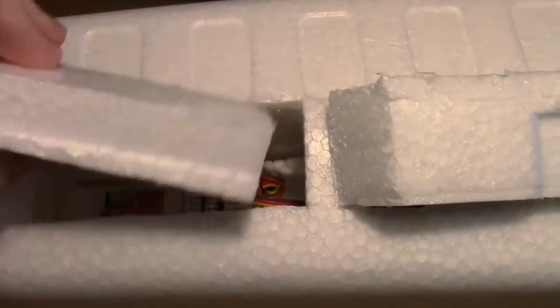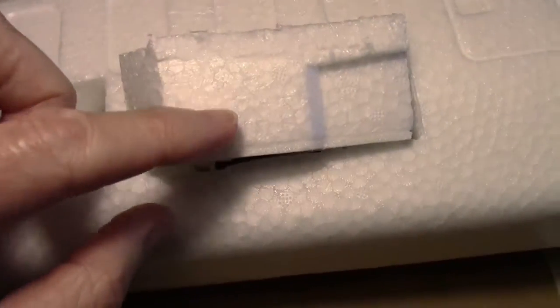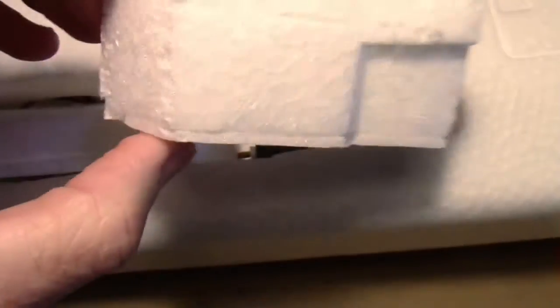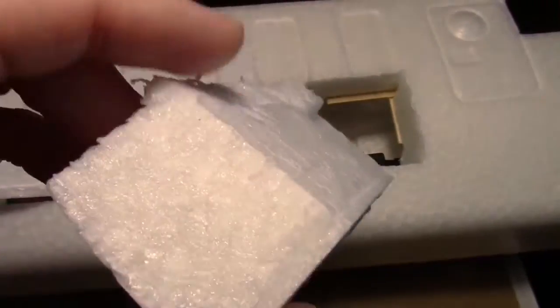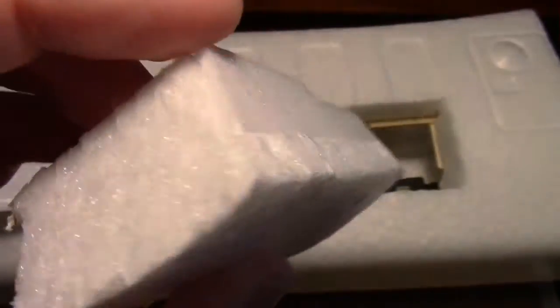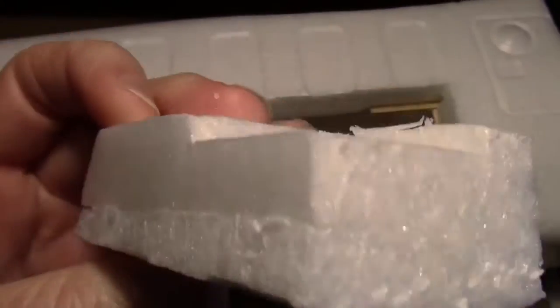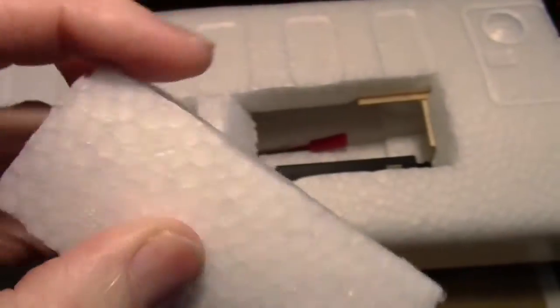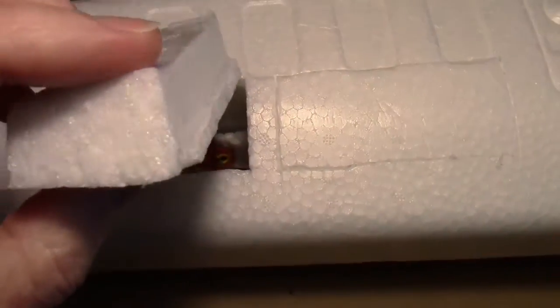So what I did on this one, and I'll do the same on the other, is I just put a little piece of Depron in there. I glued a little piece of Depron on that piece to fill that gap. That'll protect that ridge from breaking off. And I'm going to do the same thing to this one.